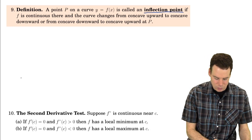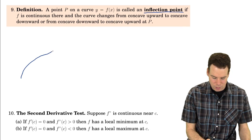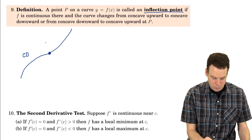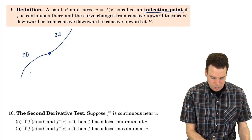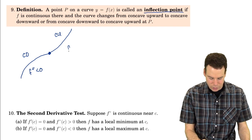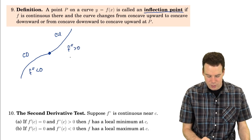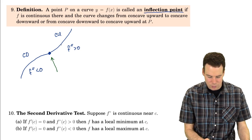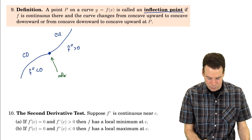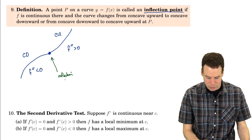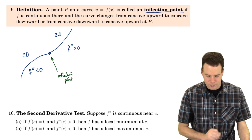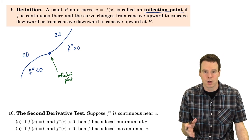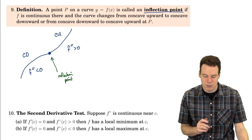For example, if the second derivative went from negative — that was concave down — to positive — concave up — this is a place where the second derivative changes from negative over to positive. The place where that switch happens is an inflection point. So whenever there's a change in concavity, going from concave down to concave up or concave up to concave down, that's known as an inflection point.